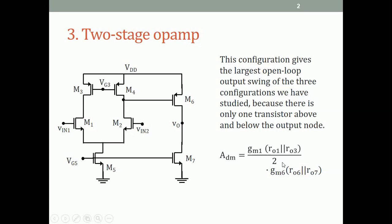This is slightly smaller than the gain of a folded cascode but of the same order, (GM·RO)². This configuration gives the largest output voltage swing in the open-loop configuration because above VO there is only one transistor and below VO there is only one transistor. So VO can go to VDD minus 0.1 V high and just 0.1 V low if the overdrives are 0.1 V.